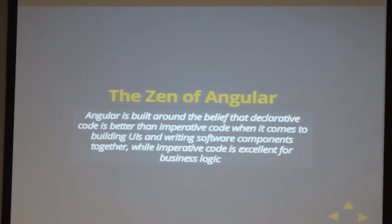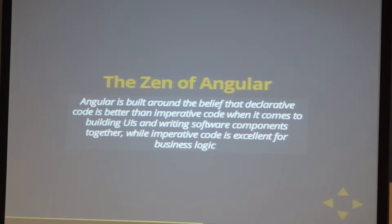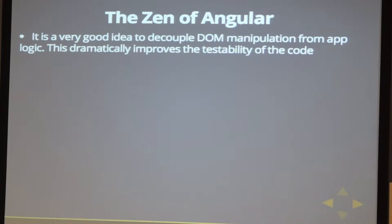Angular is built on the belief that declarative code is better than imperative code when it comes to UIs and wiring software components together, while imperative code is excellent for business logic. It is a very good idea to decouple DOM manipulation from app logic — this improves testability. You can test the server-side separately, and your client-side can be tested using JavaScript frameworks like Karma. Decoupling is a good thing.